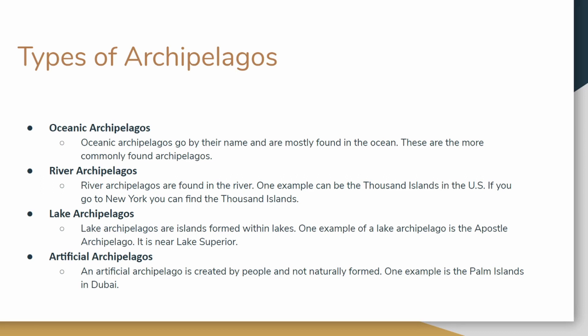River archipelagos are the second type. River archipelagos are found in rivers. One example is the Thousand Islands in the US. If you go to New York State, you can find the Thousand Islands — don't accidentally go to New York City, you won't find it there. And fun fact: it's literally a thousand islands. I thought maybe it would be 960-something or 1,020, but after I visited and researched it, apparently it's exactly a thousand islands. So it's legit.